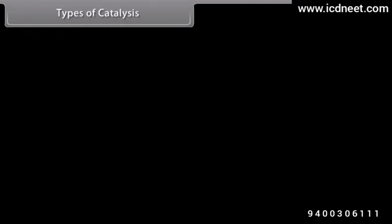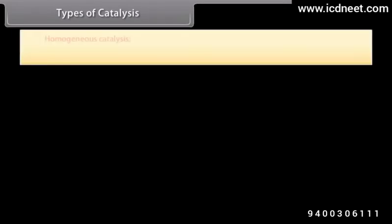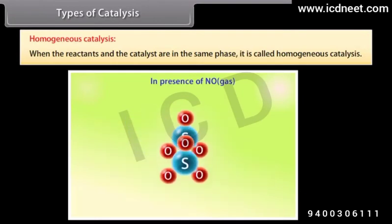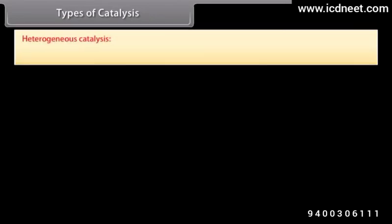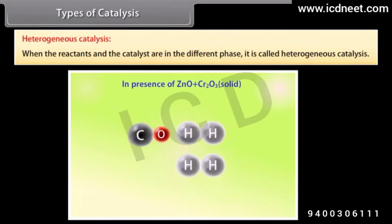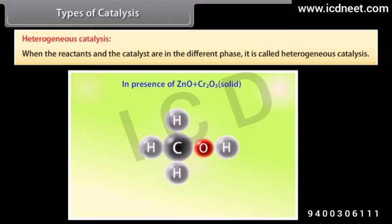Catalysis reactions are of two types: homogeneous catalysis and heterogeneous catalysis. When the reactants and the catalyst are in the same phase, it is called homogeneous catalysis. For example, oxidation of sulfur dioxide into sulfur trioxide in presence of nitric oxide in the lead chamber process; reactants SO₂ and O₂ and the catalyst NO are all in the gaseous phase. When the reactants and the catalyst are in different phases, it is called heterogeneous catalysis. For example, manufacture of methanol from CO and H₂ using ZnO + Cr₂O₃ as catalyst; reactants are in gaseous phase and catalyst is in solid phase.